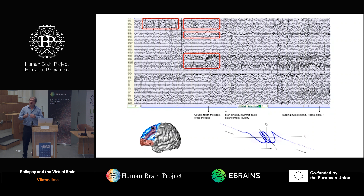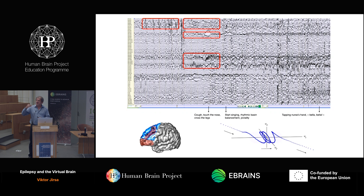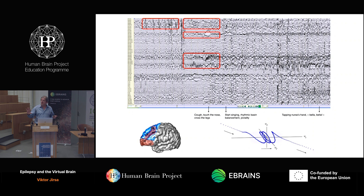Remember the coughing, the rocking of the body, when she touched her nose multiple times. From one seizure to the other, it is reproducible. This is a very rare seizure and it's also easy on the eye. Please note this very fast activity, low amplitude, fast, and then it starts becoming stronger. This is in the temporal lobe.